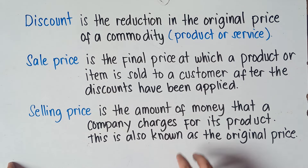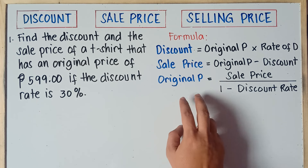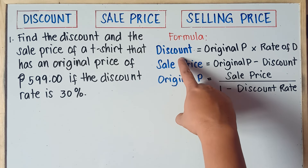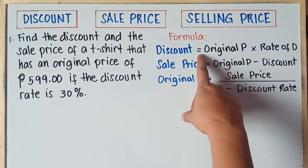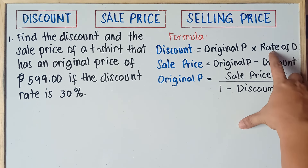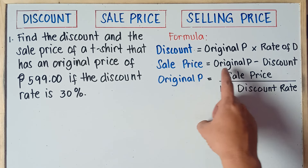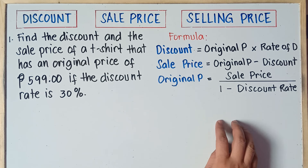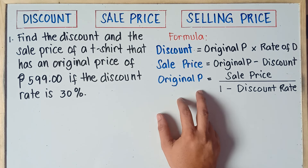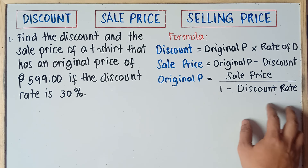To formally understand this, let's have some word problems. But before that, we need to know the formula. To get the discount, the formula is: Discount = Original Price × Rate of Discount. The rate of discount means the percent of the discount. To get the sale price: Sale Price = Original Price − Discount. And to get the original price: Original Price = Sale Price ÷ (1 − Discount Rate).